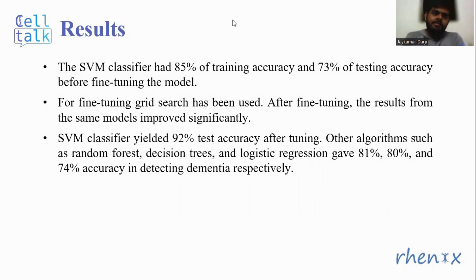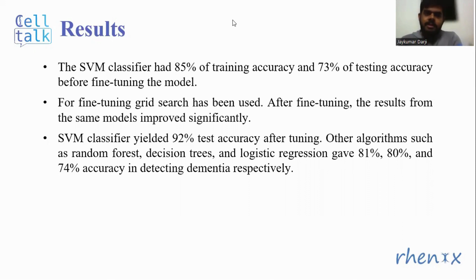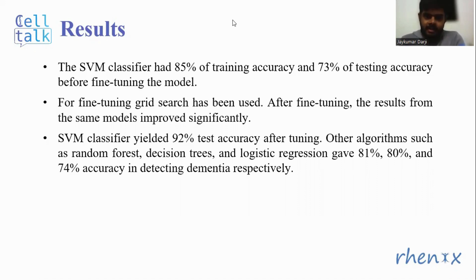The SVM classifier had 85% training accuracy and 73% testing accuracy before fine-tuning the model. For fine-tuning purposes, grid search has been used. After fine-tuning, the results from the same models improved significantly. The SVM classifier yielded 92% testing accuracy after tuning. Other algorithms such as random forest, decision trees, and logistic regression gave 81%, 80%, and 74% accuracy in detecting dementia respectively.